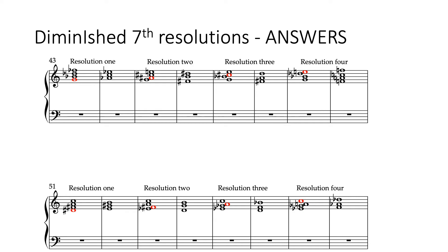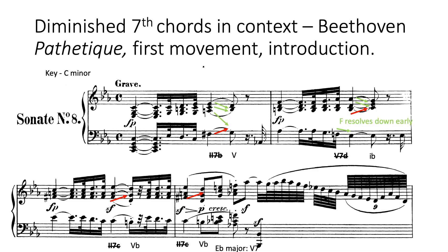We're going to have a look at some diminished seventh chords in context now. The best example I can think of — and one you'll be relatively aware of if you're doing the Edexcel GCSE course — is the opening of the Beethoven Pathétique Sonata. I'll just play this through to remind us what it sounds like, and then we'll have a look at how Beethoven uses diminished sevenths in this passage.